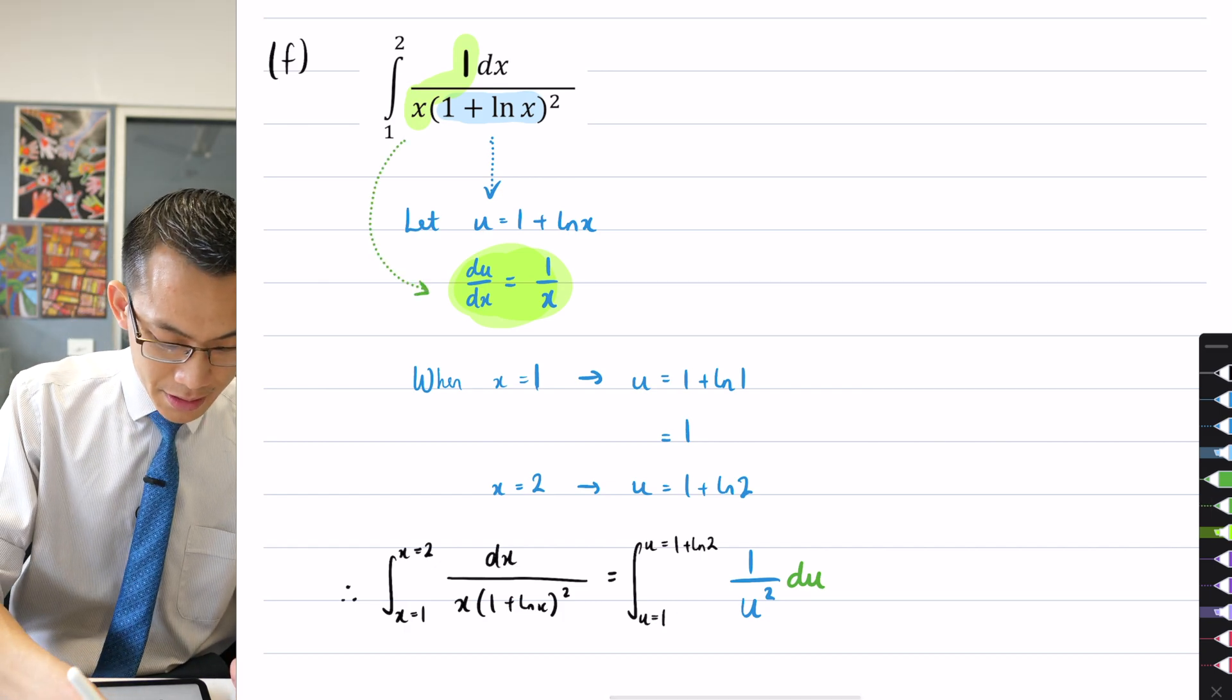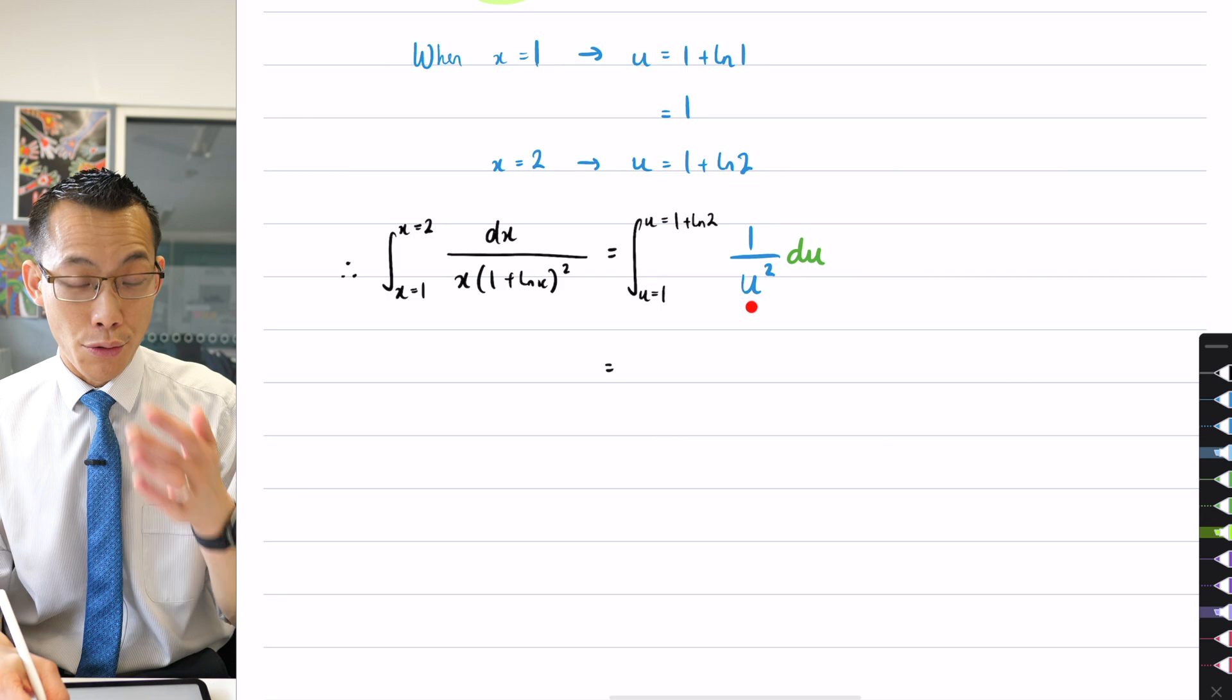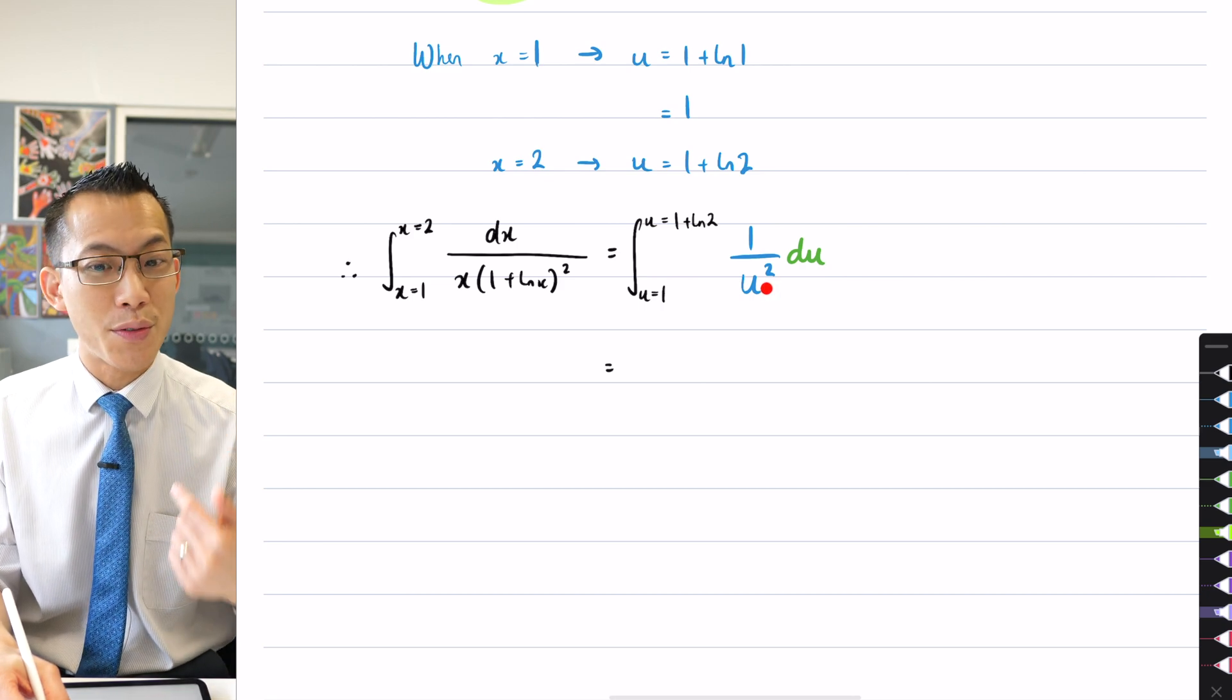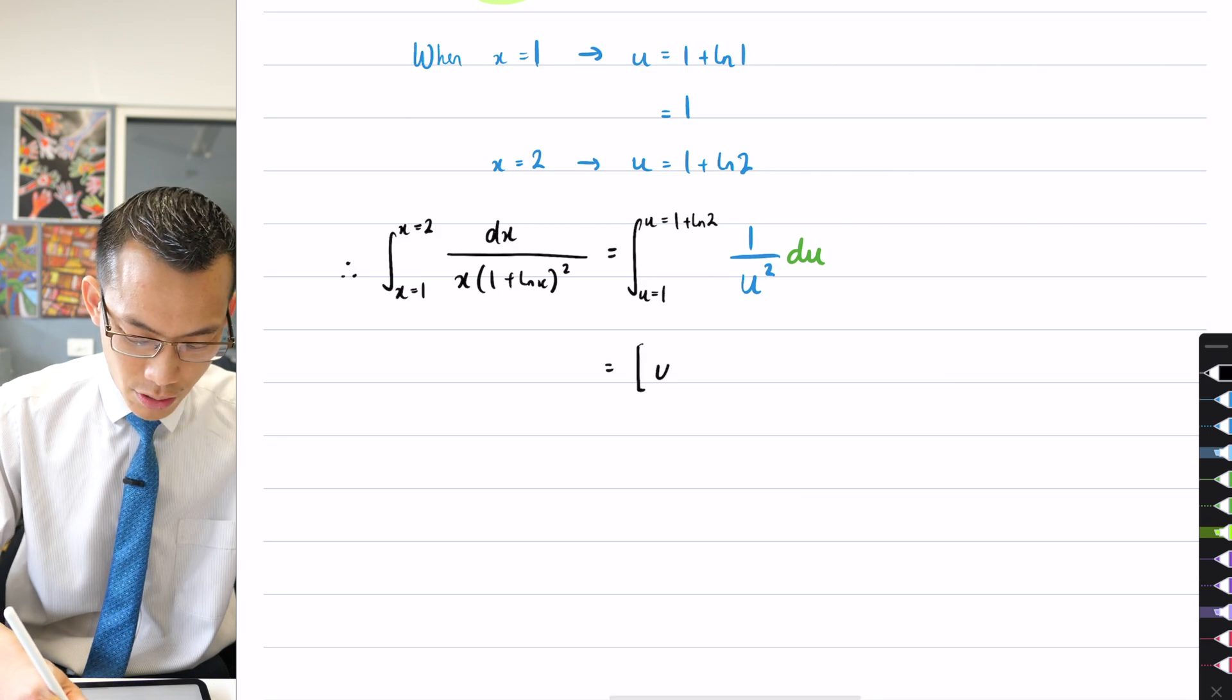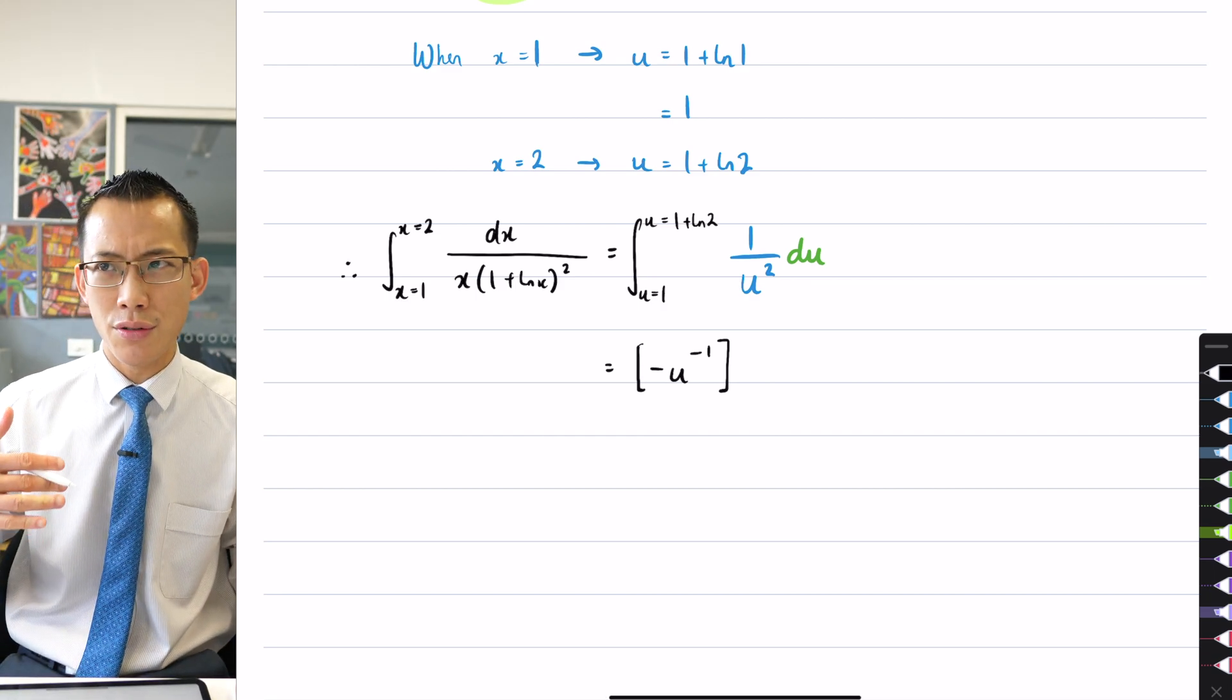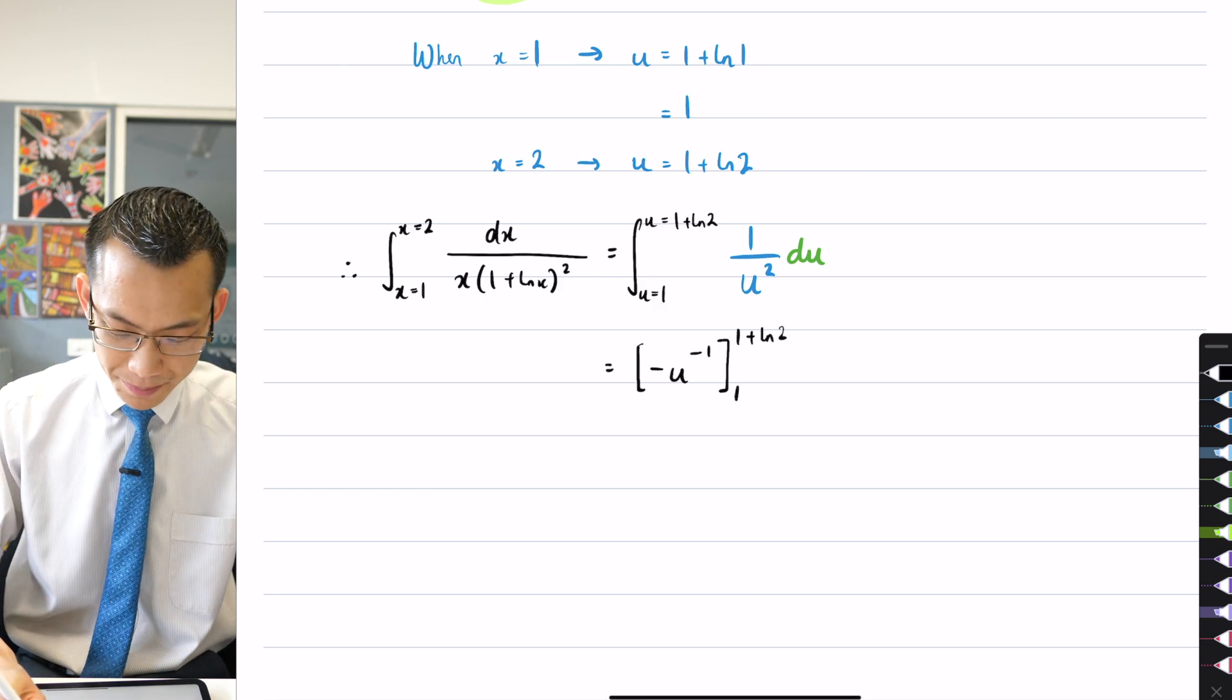This is great. I've made this about as easy to integrate as you can see. This is u to the power of negative 2. I think we know what to do with this. I'm going to raise the power by 1 and then I'm going to divide by the new power. So that's going to be, here comes my square brackets, negative u to the power of minus 1. You see what I've done there? The negative 2 went up to negative 1 and I divided by the negative 1. And of course, I've got my boundaries 1 and 1 + log 2.